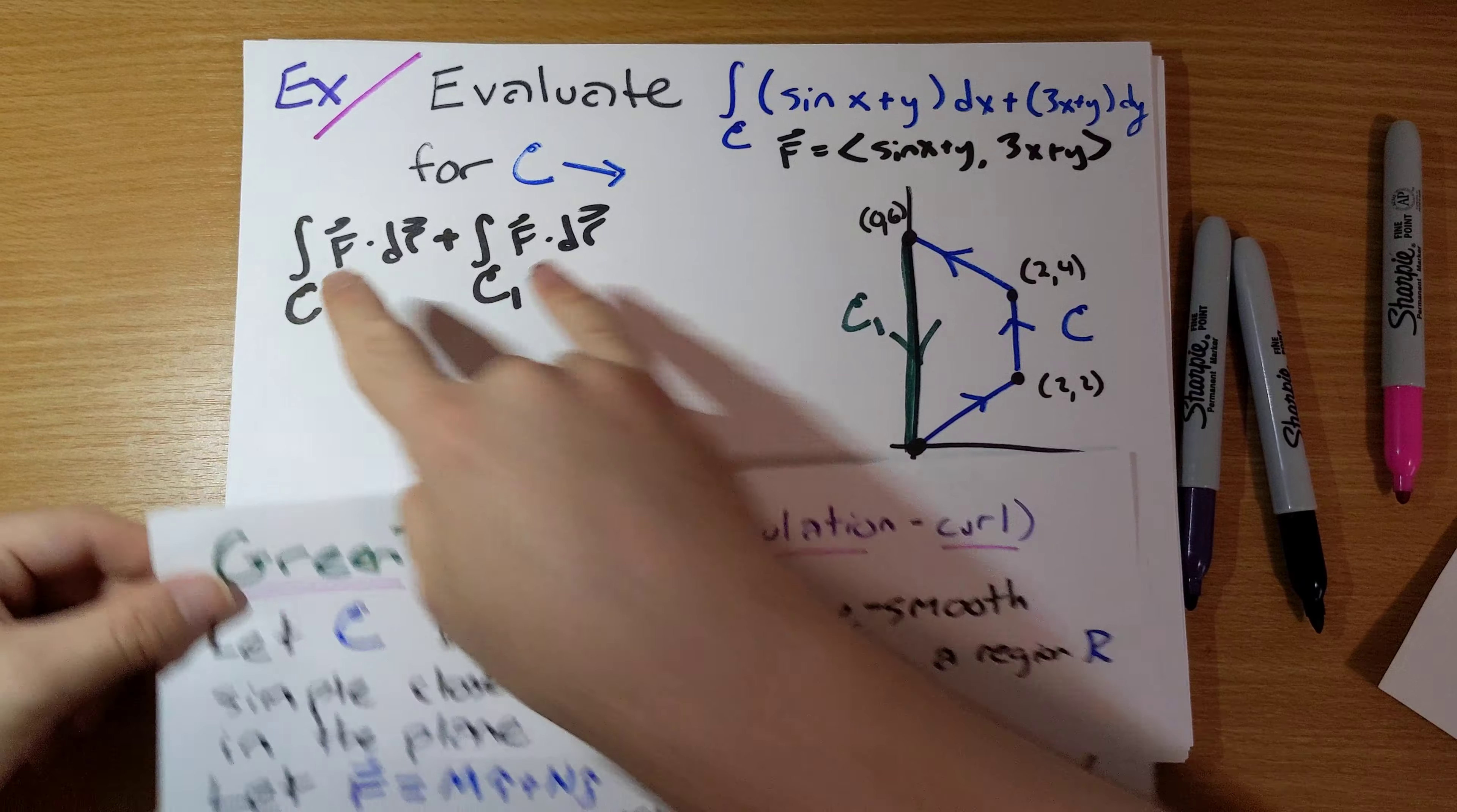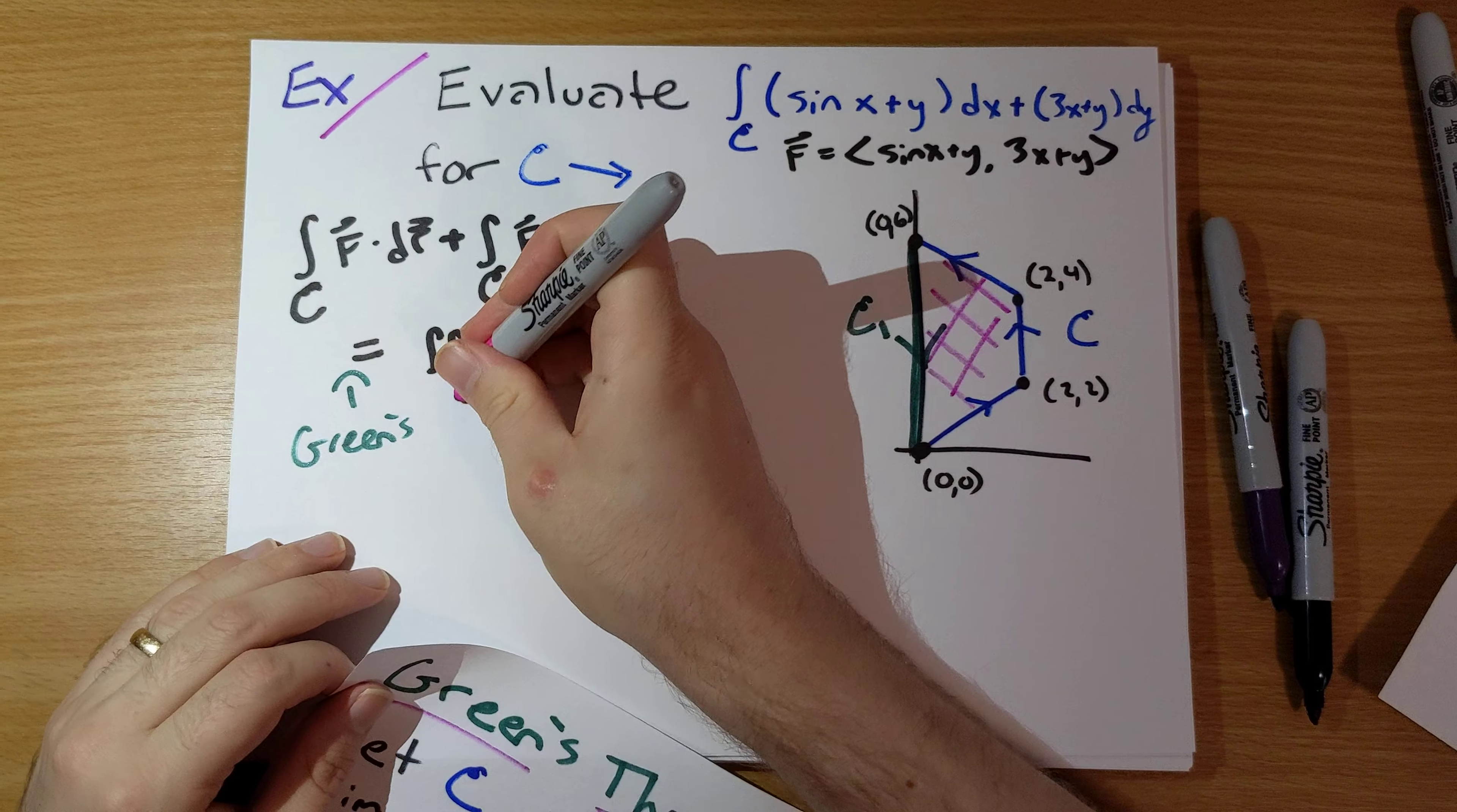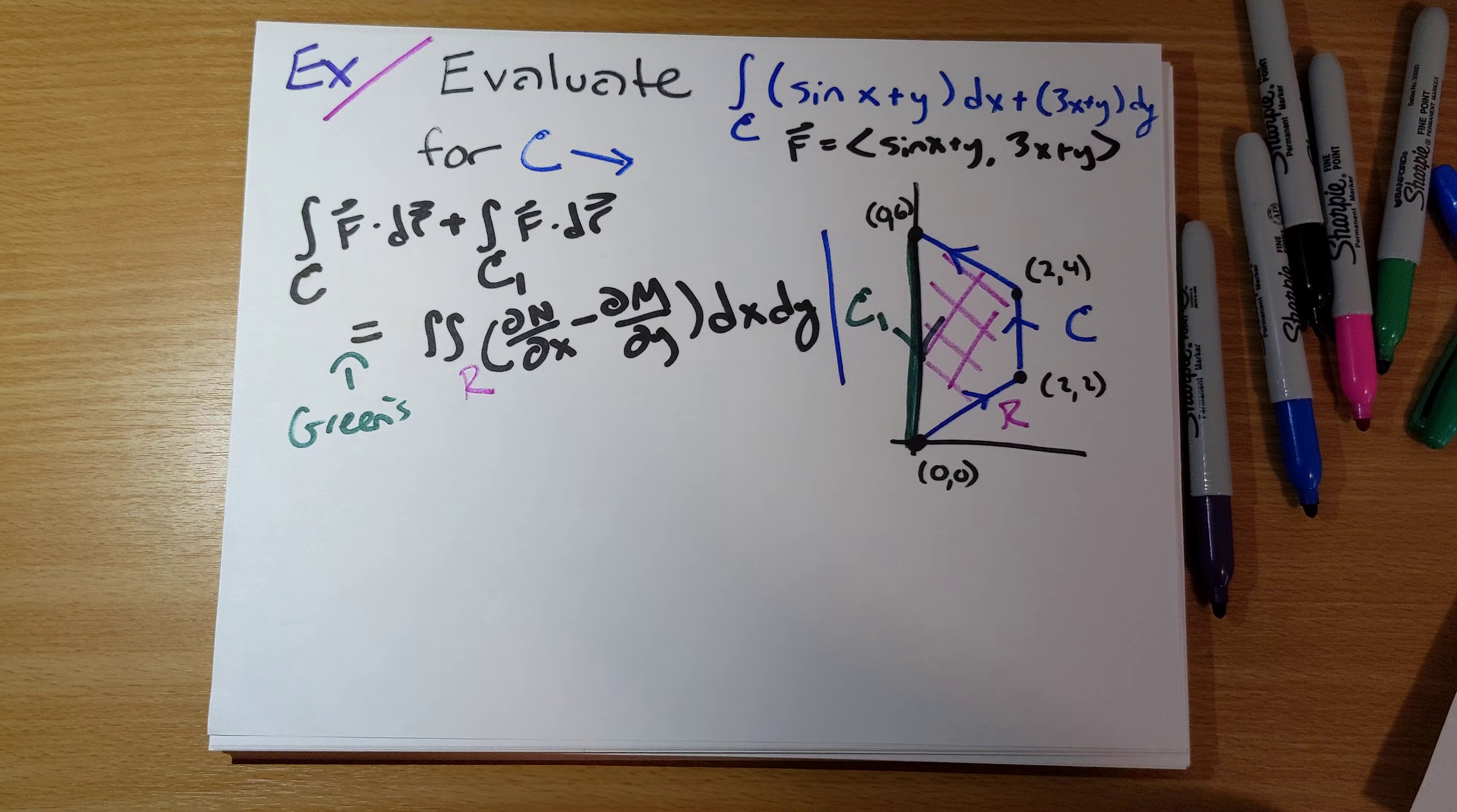By Green's theorem, this equals the double integral over the trapezoid of ∂M/∂x - ∂N/∂y dxdy. It turns out that evaluating one line integral and this double integral over the trapezoid is going to be easier than evaluating three separate line integrals, and then we just rearrange at the end.